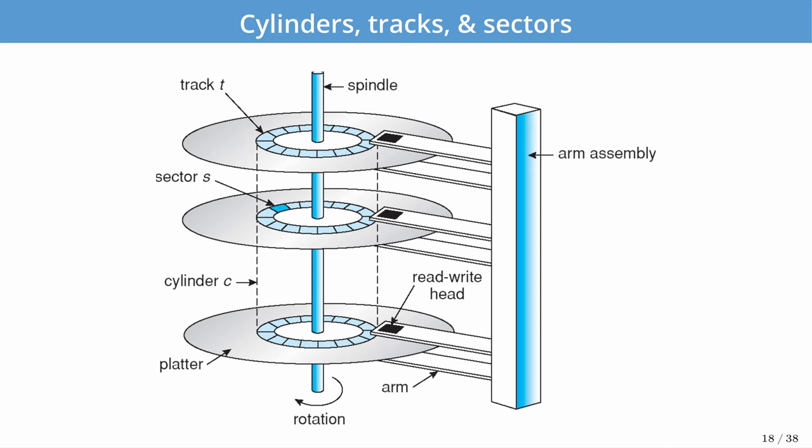Generally, at a given time only one read head is going to be active — a single head on one side of one platter is going to be reading or writing. A cross-section of the disk shows three platters, each with two heads on either side. We can see the concentric rings that form the tracks, and the group of all the tracks is called a cylinder. Within each track it is made up of a bunch of sectors. In most disks, including modern disks, sectors are either 512 bytes or 4 kilobytes. Some drives allow you to change the sector size slightly, but typically you'll find these two sizes.